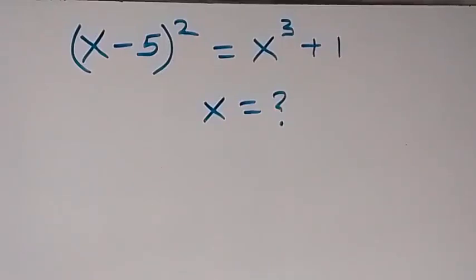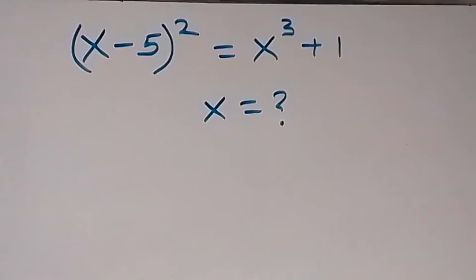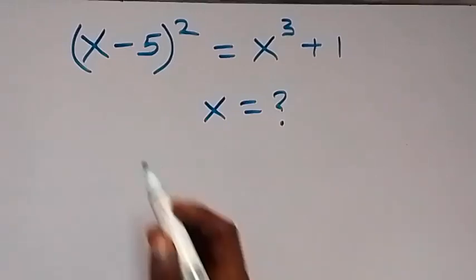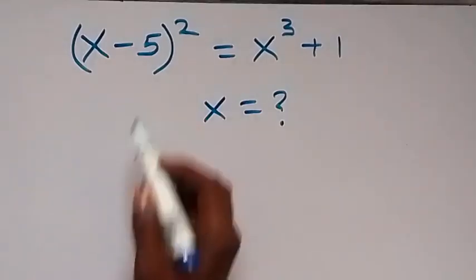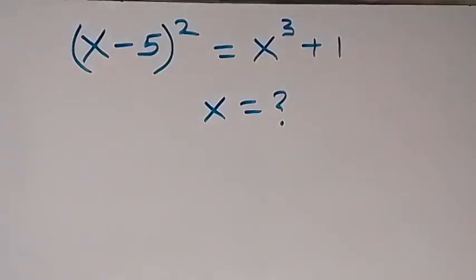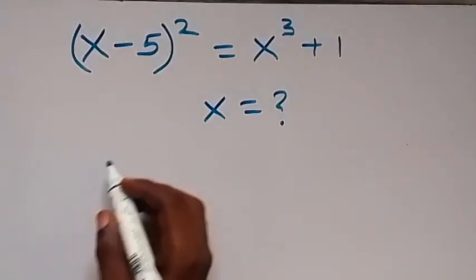Hello and welcome. How to solve this nice math problem: we have (x minus 5) squared equals x cubed plus 1. From here let's use the first method — we have two methods here.